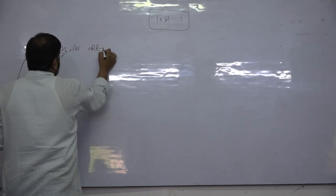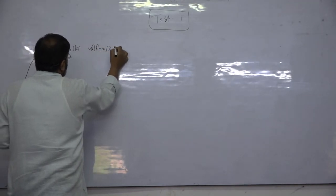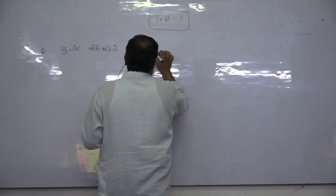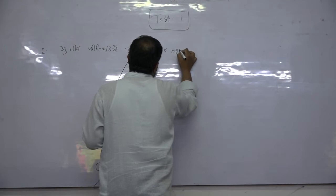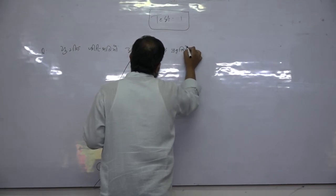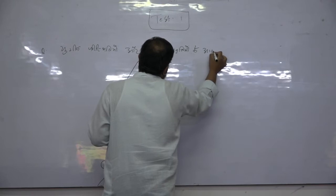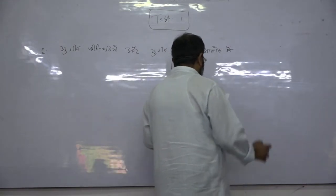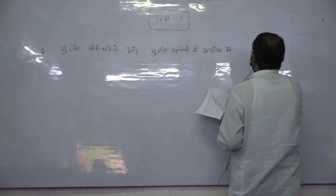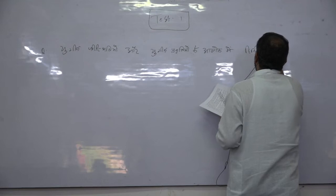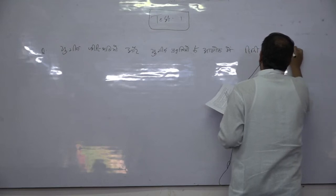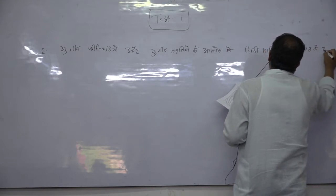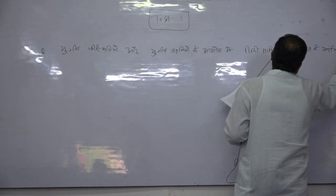Yugin parishthitiyon, ya yugin pravaahon aur yugin privirhtiyon ke alok mein. Hindi sahit ke itihas ke arambhik kaalkhande ke.